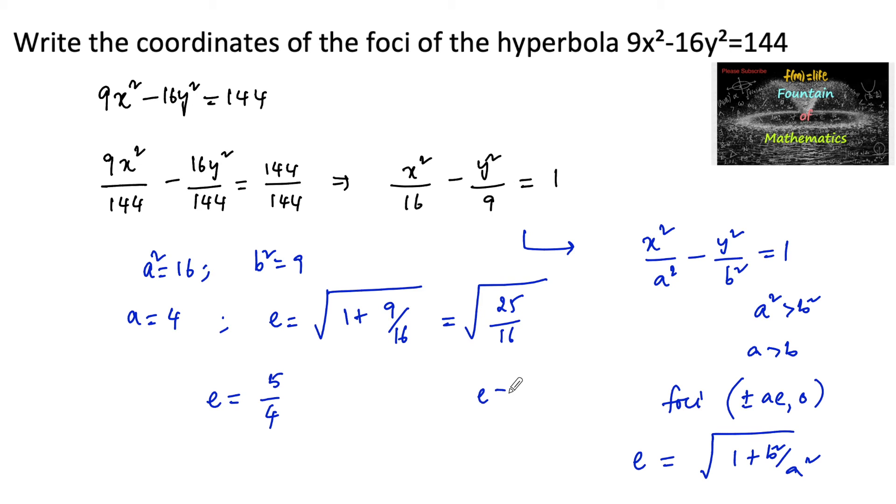The coordinates of the foci are (±ae, 0), which equals (±4 × 5/4, 0) = (±5, 0). Therefore, the coordinates of the foci of the given hyperbola are (5, 0) and (-5, 0).